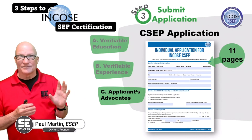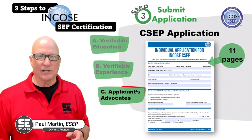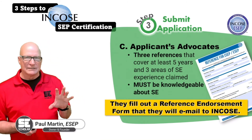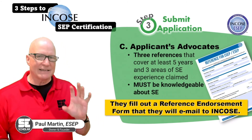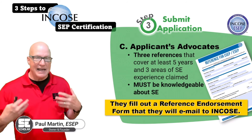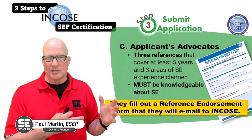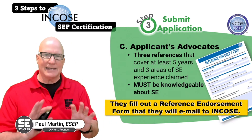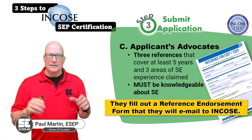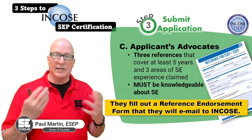Last but not least, you have to get your references together — your advocates. You need to find three system engineers. It's very important that your references understand system engineering, and they actually have to put that on the endorsement form — explaining how they've done system engineering themselves. What INCOSE is looking for is actual system engineers who can confirm what you did and say they endorse that this person performed the functional areas they claim. They'll fill out the form accordingly and email it to INCOSE.